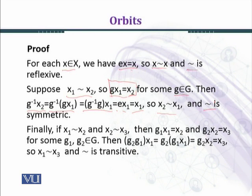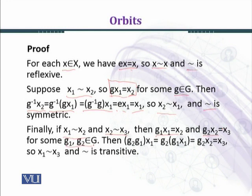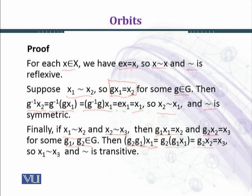Finally, we want to prove the relation is transitive. We assume that x₁ relates to x₂ and x₂ relates to x₃. Then by definition of the relation, we have g₁·x₁ equal to x₂ and g₂·x₂ equal to x₃ for some g₁, g₂ belonging to G. Then g₂·(g₁·x₁) equals g₂·(g₁·x₁). Using the second condition of group action, since g₁·x₁ equals x₂, this equals g₂·x₂, which equals x₃.